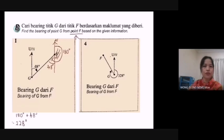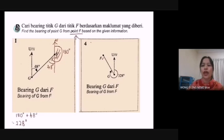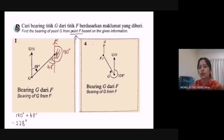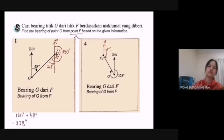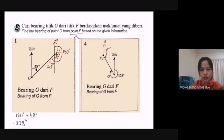For question four: bearing of point G from point F. Since it is from point F, the first thing you need to do is draw a compass direction pointing north at F. The compass direction must be parallel to the original north line. Then measure the angle from north to the line in the clockwise direction. To find the value of this angle, we use the alternate angle — extend the line longer.